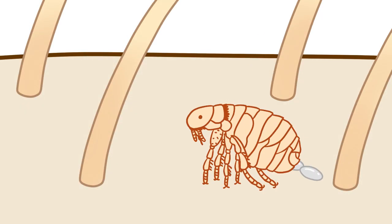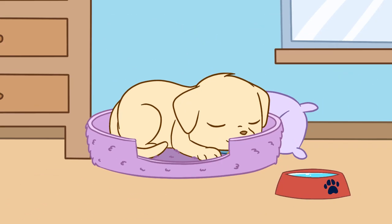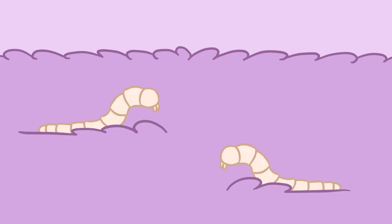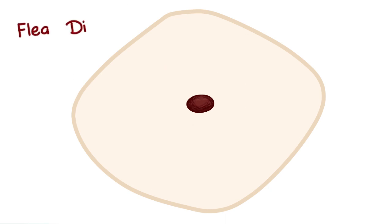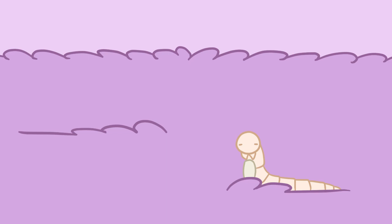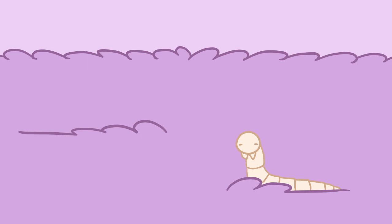In a couple of days, the fleas start to lay eggs on their new host. The eggs are not sticky, so they fall off the host and accumulate in places where the animal usually rests. When the eggs hatch, the first stage larva will crawl out. They feed on organic debris like dead skin, hair, and especially adult flea feces that also fall off the animal. Flea feces, or flea dirt, are pretty much particles of dried blood — if moistened on a piece of filter paper, a red halo of hemoglobin diffuses out of it. The larval stage is also the stage where they may ingest Dipylidium caninum eggs, serving as this tapeworm's intermediate host.